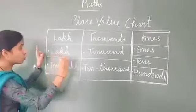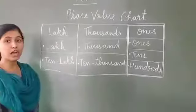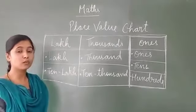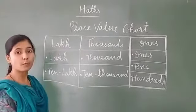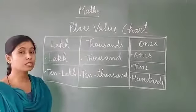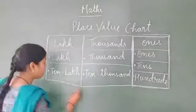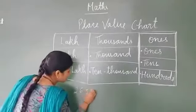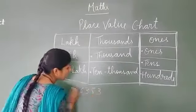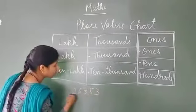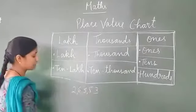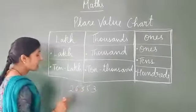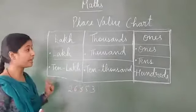So this is your place value chart. Now you will come to know where you have to use a comma, because a few of you are putting commas incorrectly — like after two, six, three, five, three — and that is wrong. See how you have to place a comma.